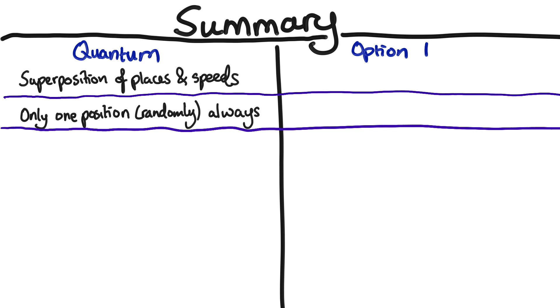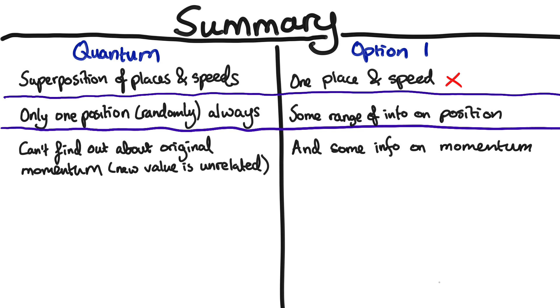And worse, you can't ask the particle about its momentum now. The value you get is completely unrelated to the original superpositions of momentum. On the other hand, this option says that the particle really has one speed and one position, and that you can get some range of information about the particle's position, and that you can then go and ask about the momentum as well.